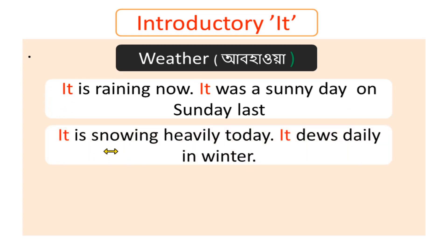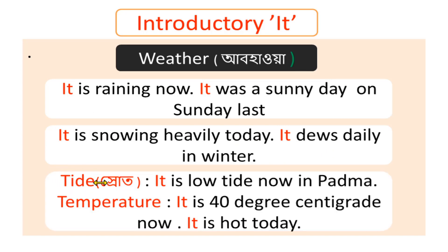Now for weather expressions using introductory 'it': 'It is snowing heavily today.' That is an example of 'it' for weather. Another example: 'It is low tide now in Padma.' And: 'It is hot today.' These sentences all use introductory 'it' to indicate weather or environmental conditions.